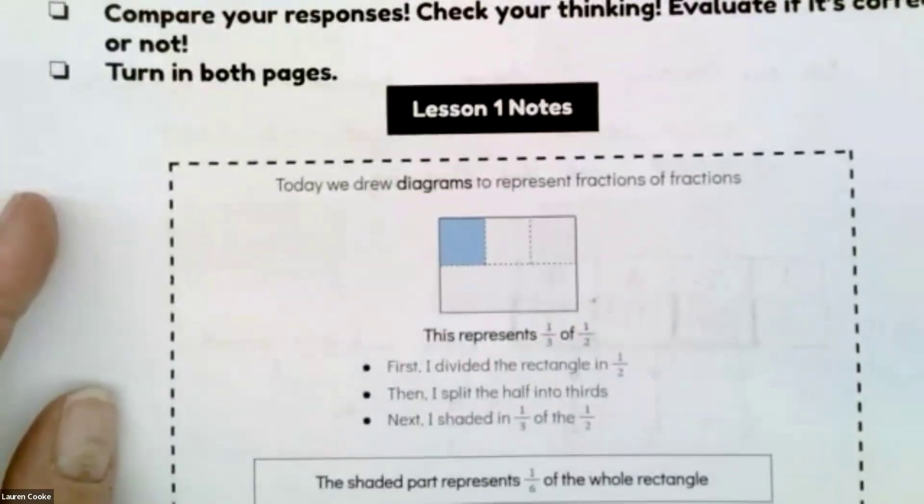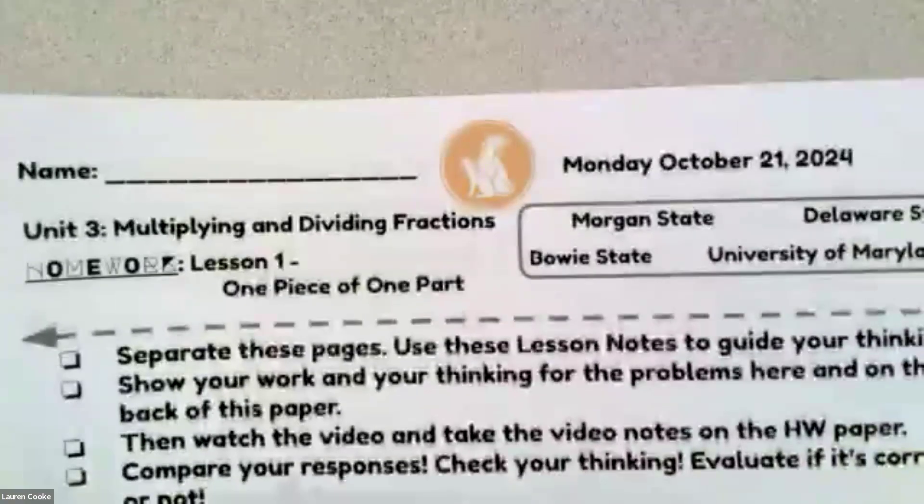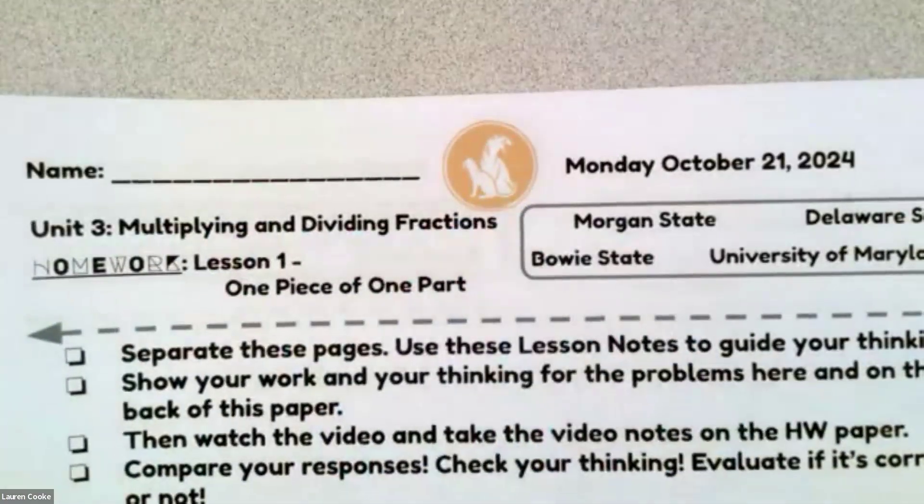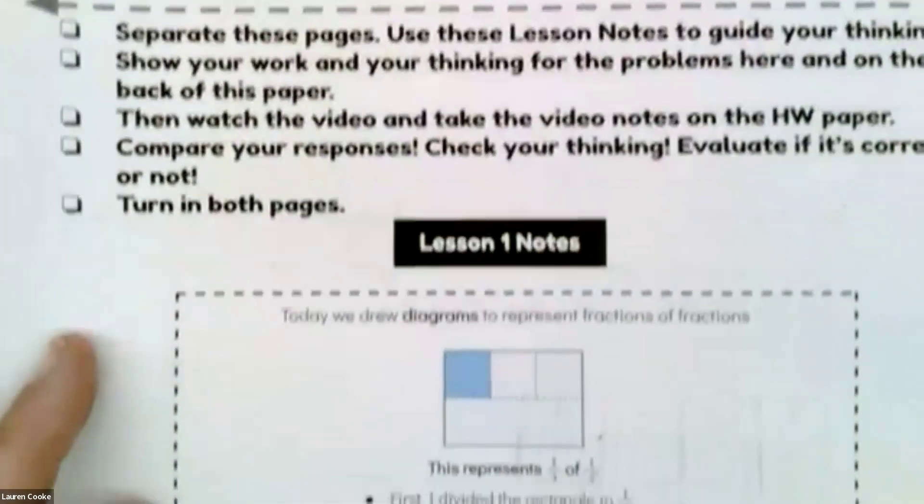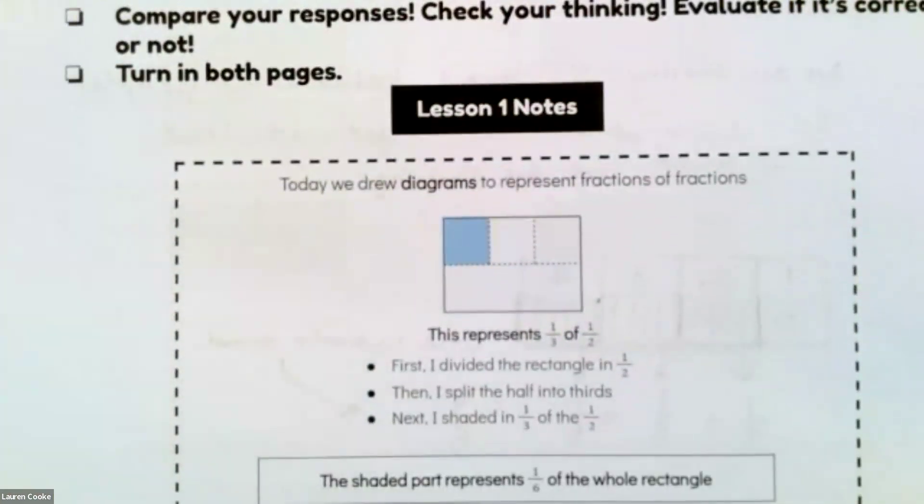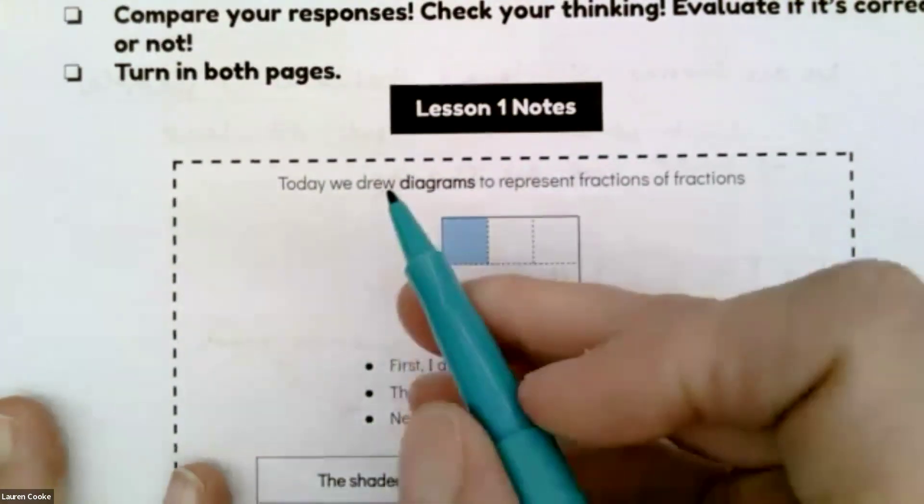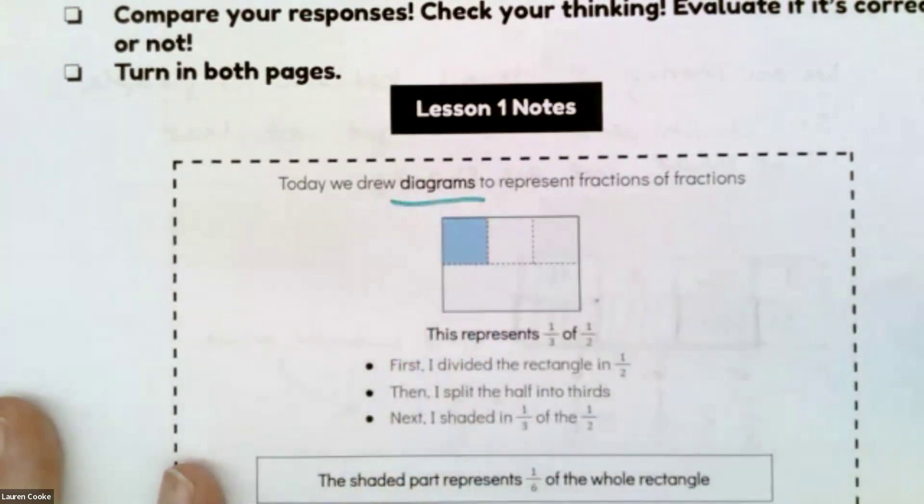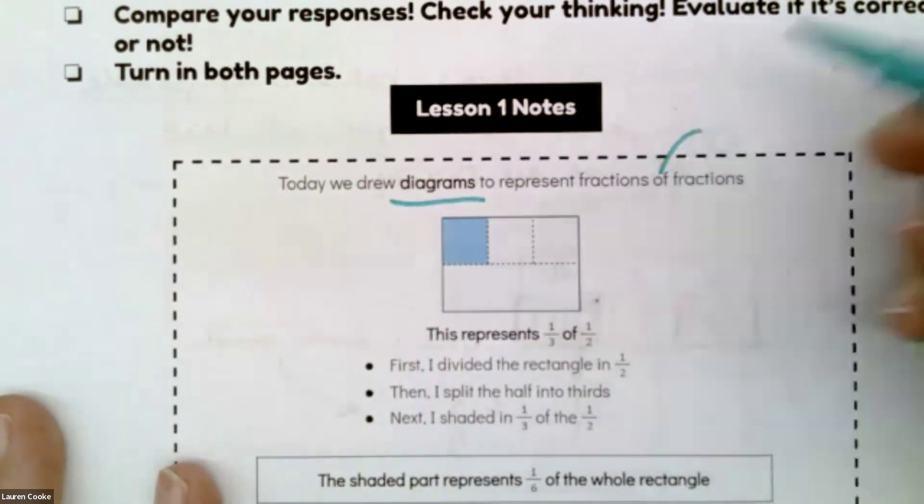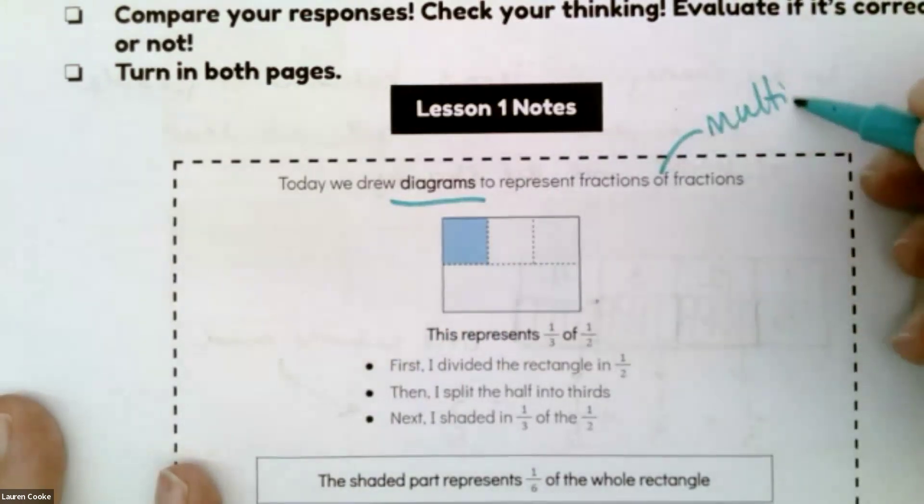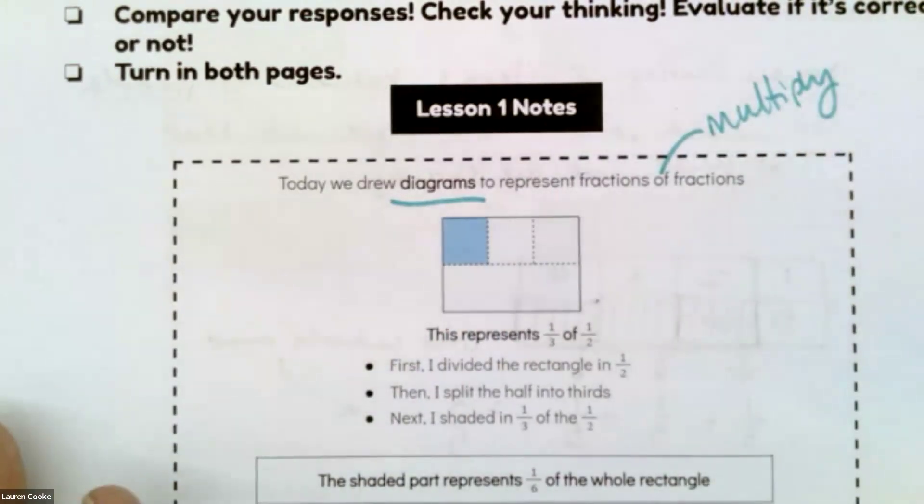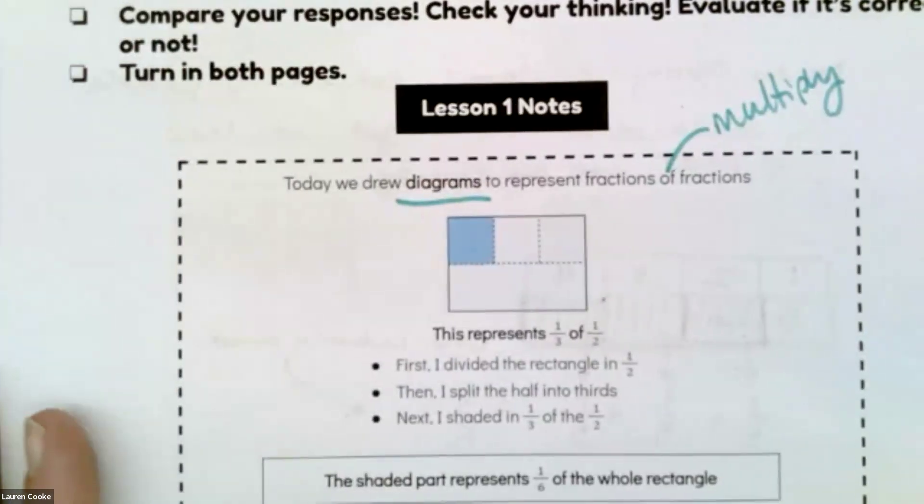I do want to get started. This is what we learned on Friday. We started Unit 3, which is multiplying and dividing fractions. That's new. We were talking about the macaroni and cheese. Basically, on Friday, we drew diagrams to represent fractions of fractions, and that 'of' we know is to multiply, something of something else.